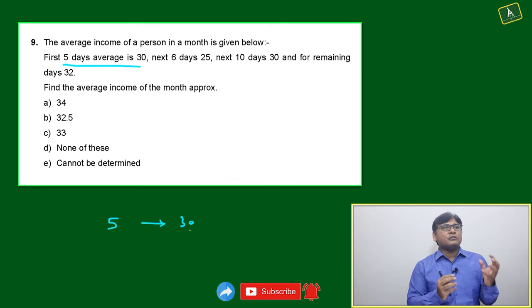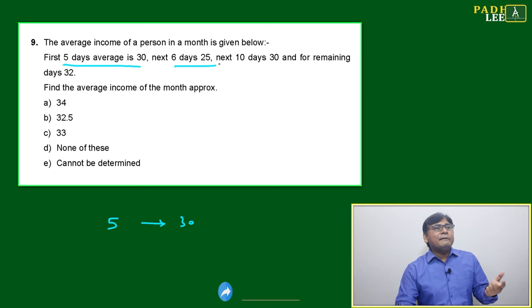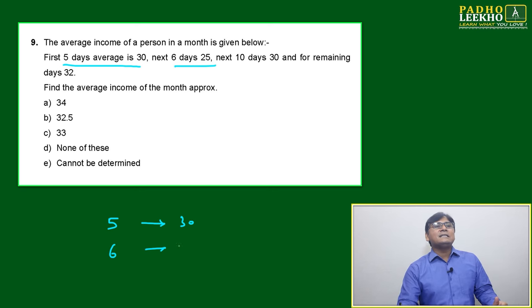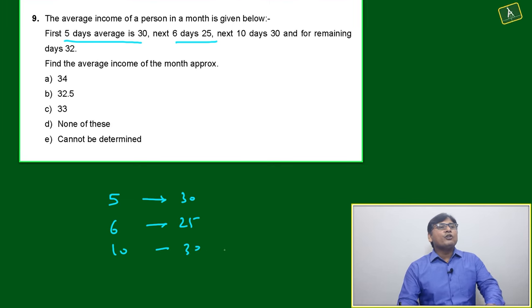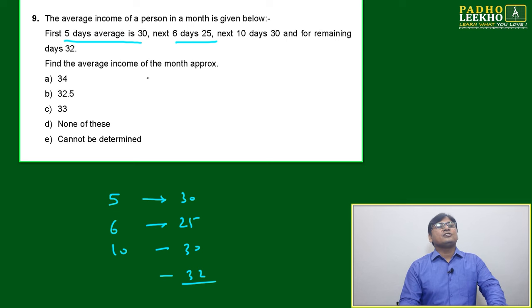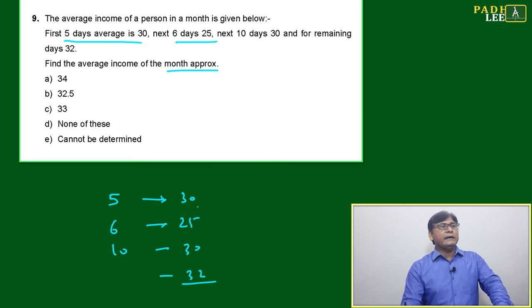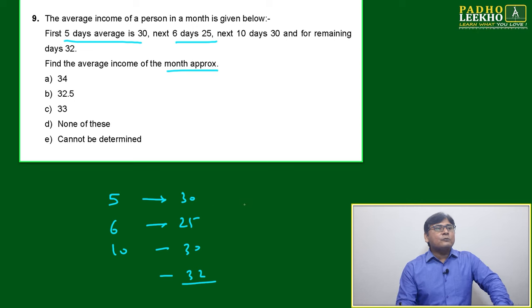Five days average is 30, next six days average is 25, next 10 days average is 30, and for the remaining days it's 32. Find the average income of the month approximately. How much will we be able to calculate?